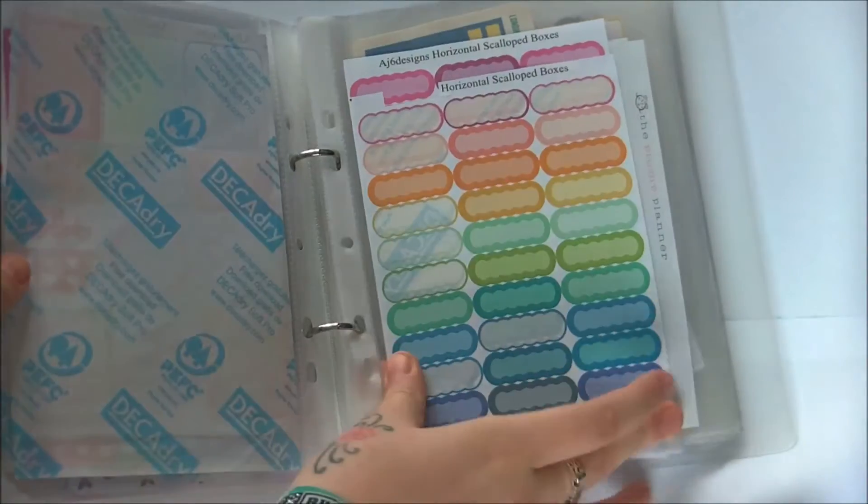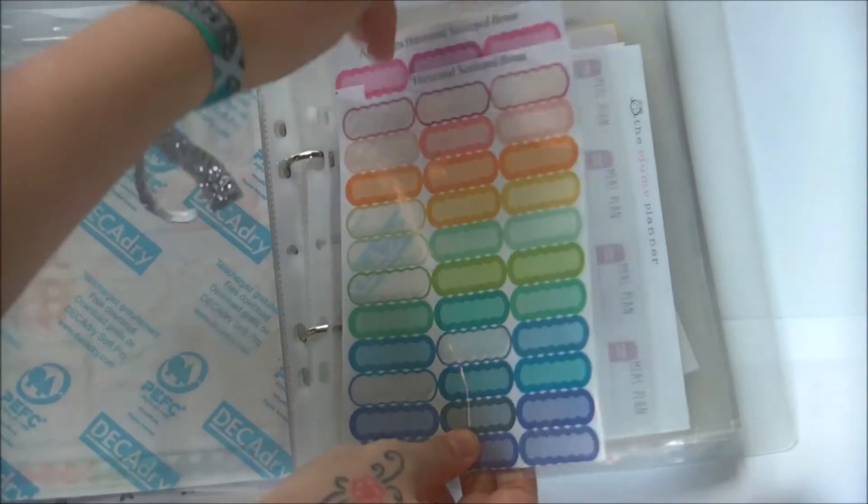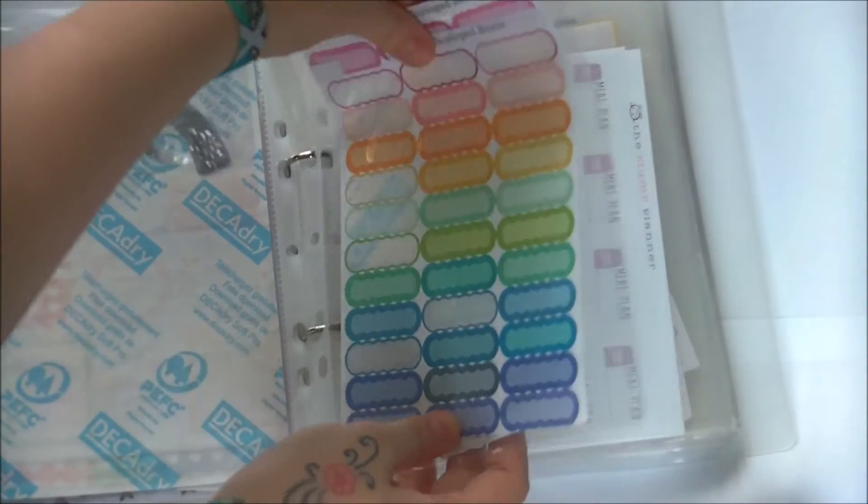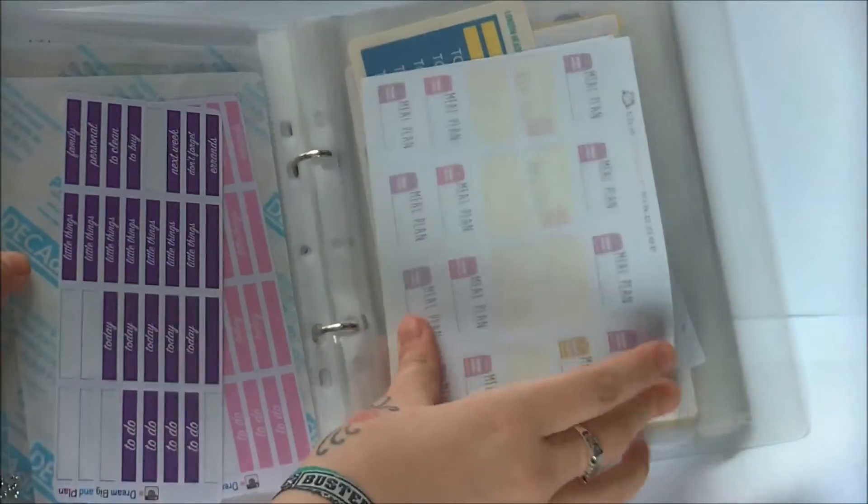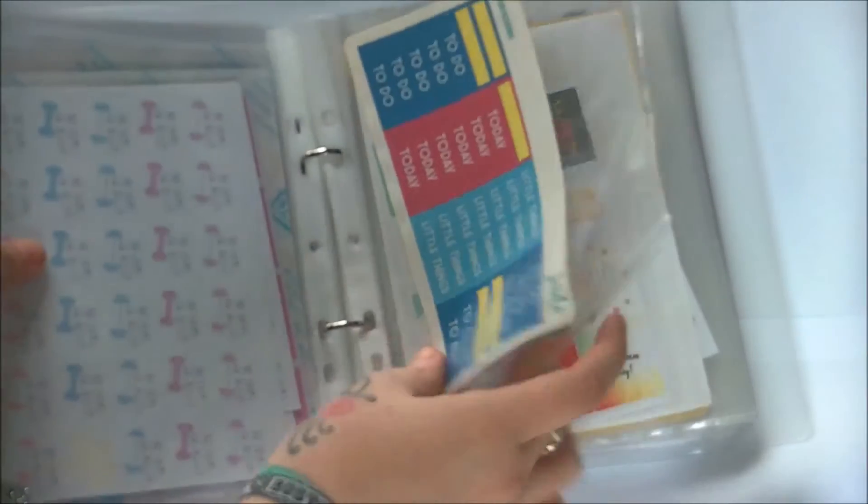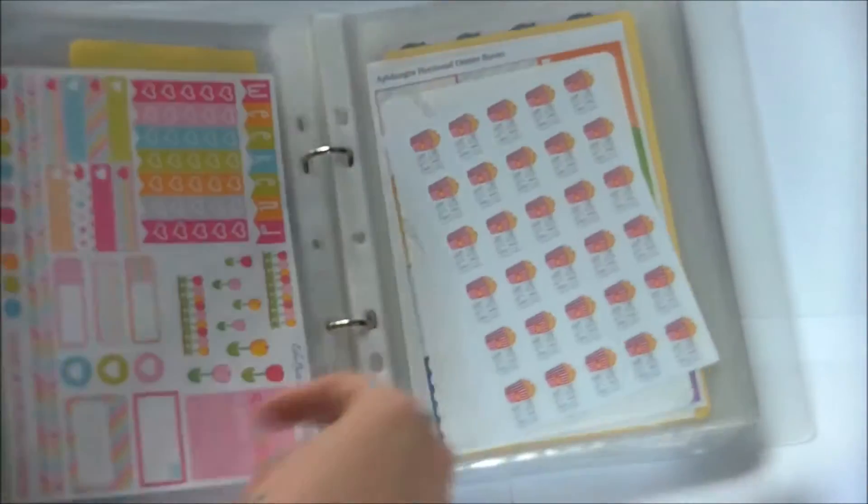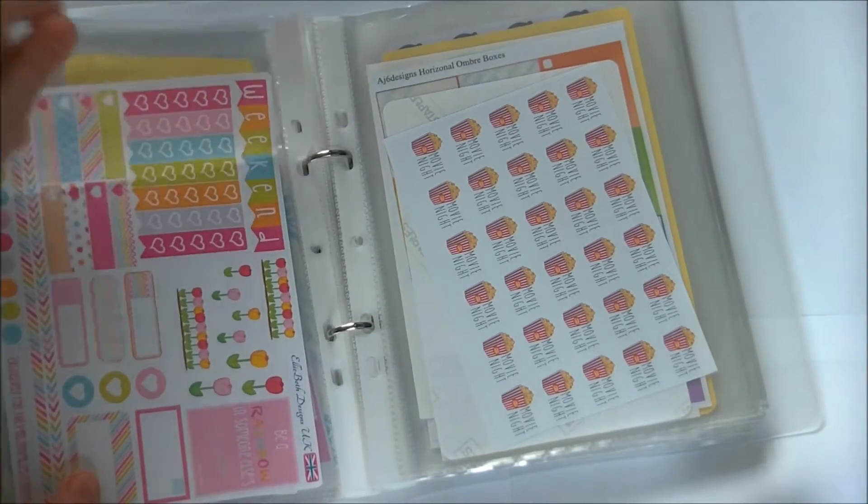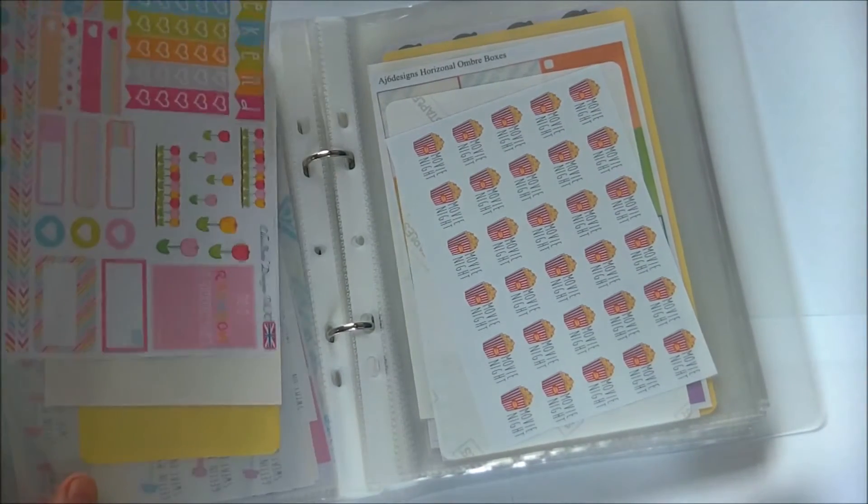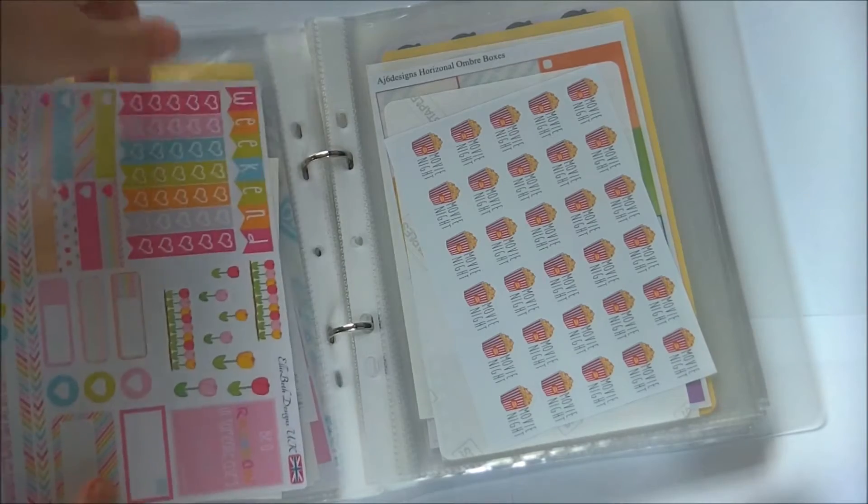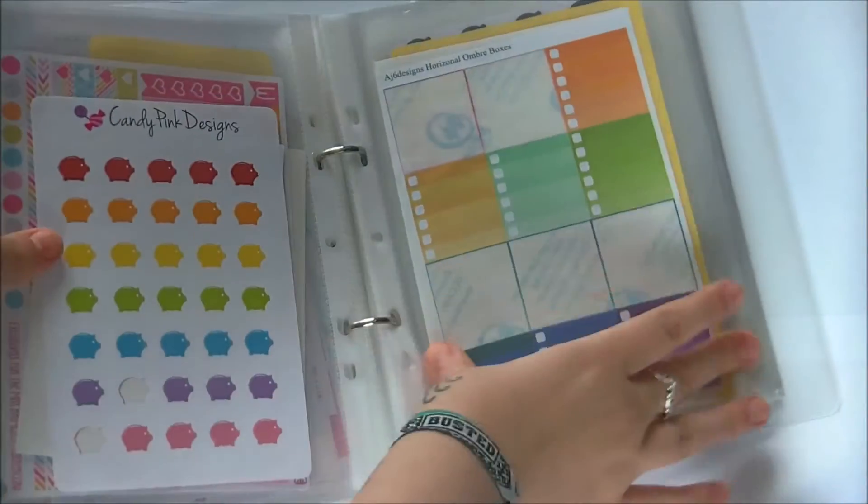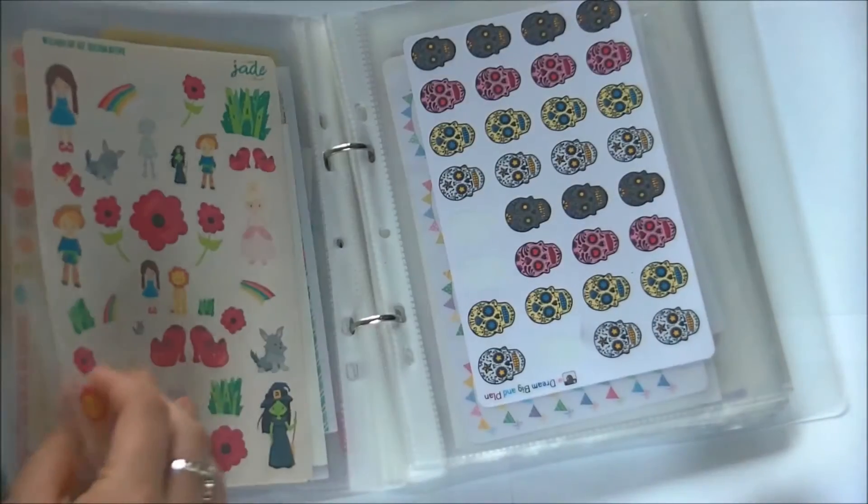I also have the doubles behind, so if I have two of the same sheet I will put one behind the other. That's all my functional ones in here, also samplers. This one was from Any Breath Designs, came in the gift bags from Planner Con, so it's just one sheet that will go in there as well.